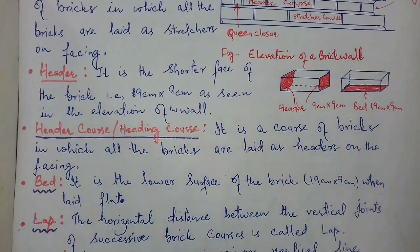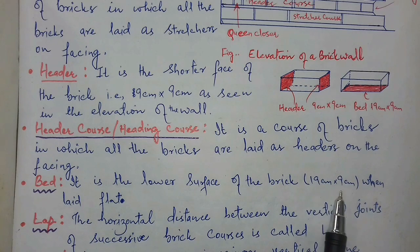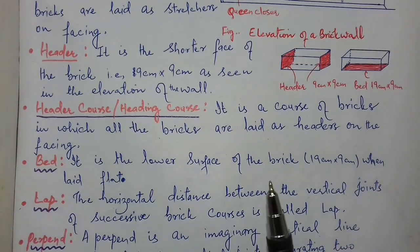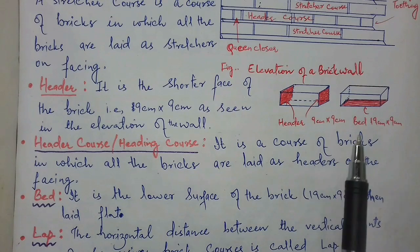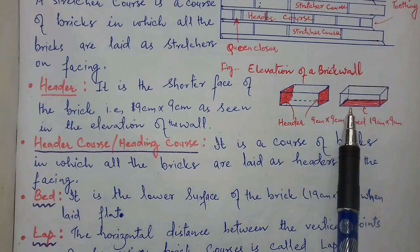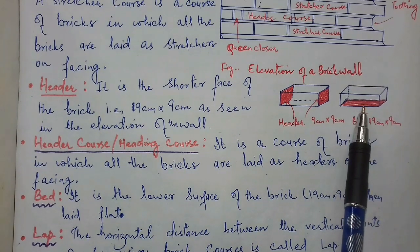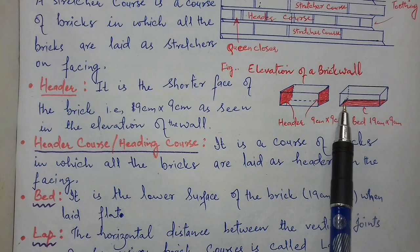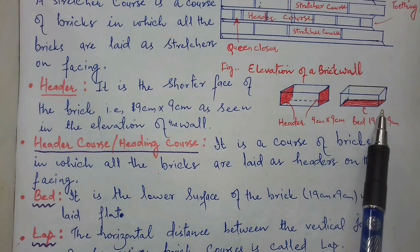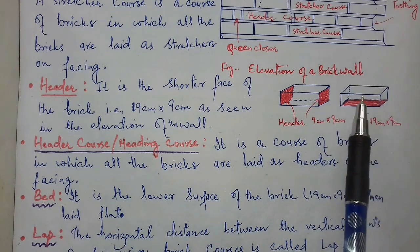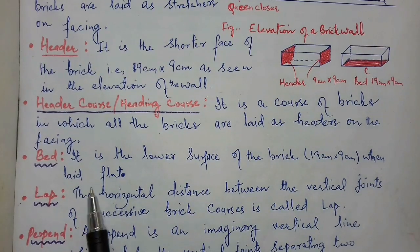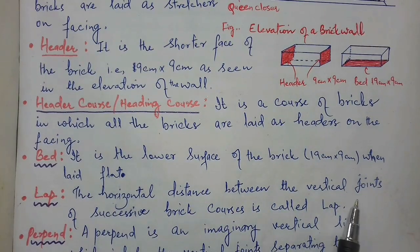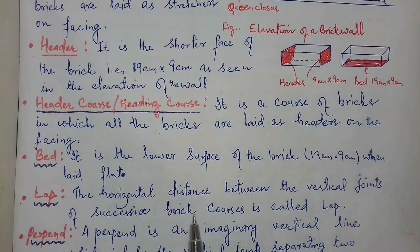Another term is bed. It is the lower face of the brick — 19 cm by 9 cm — when laid flat. As you can see in this diagram, this lower face of the brick, whose length is 19 cm and width is 9 cm, is known as bed.